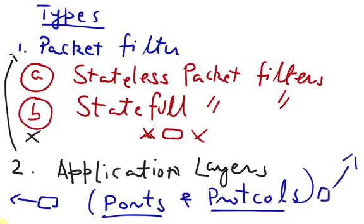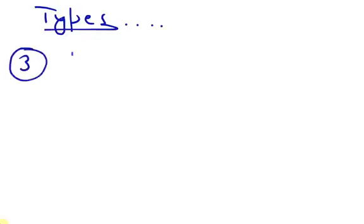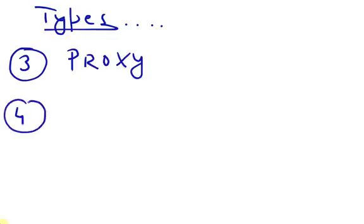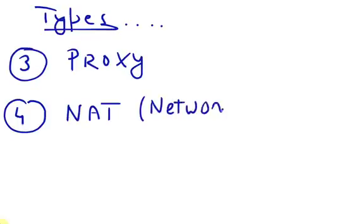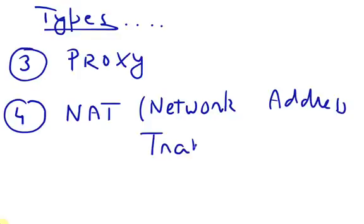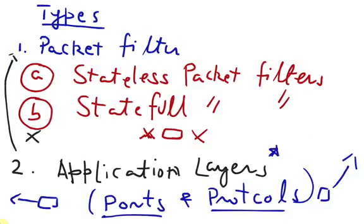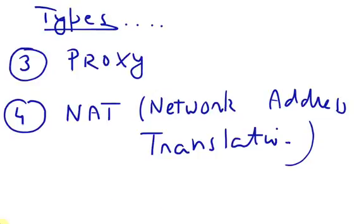The third type of firewalls we will be discussing are called proxy servers or proxy firewalls. The fourth type are called NAT firewalls or Network Address Translation firewalls. Some people say there is another kind called the next generation of firewalls, but these are just a newer version of the application layer firewalls and they do deep packet inspection.